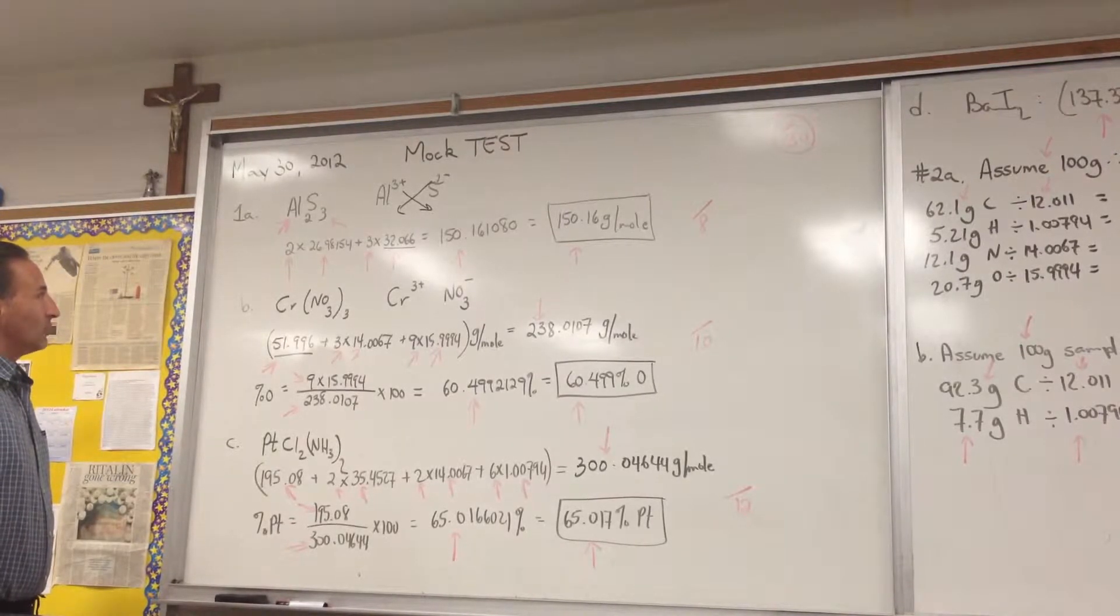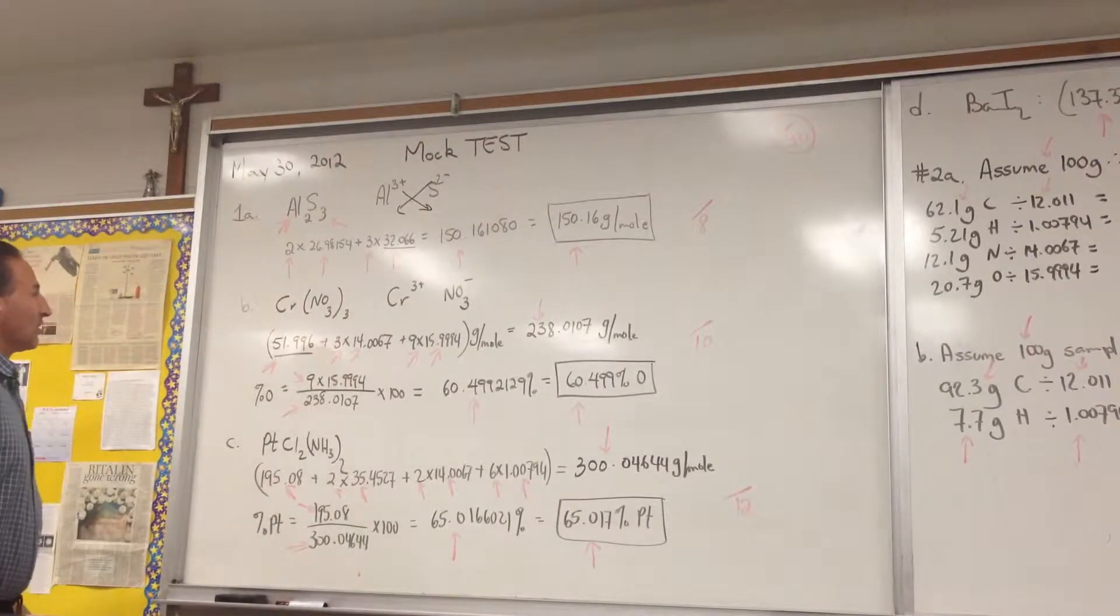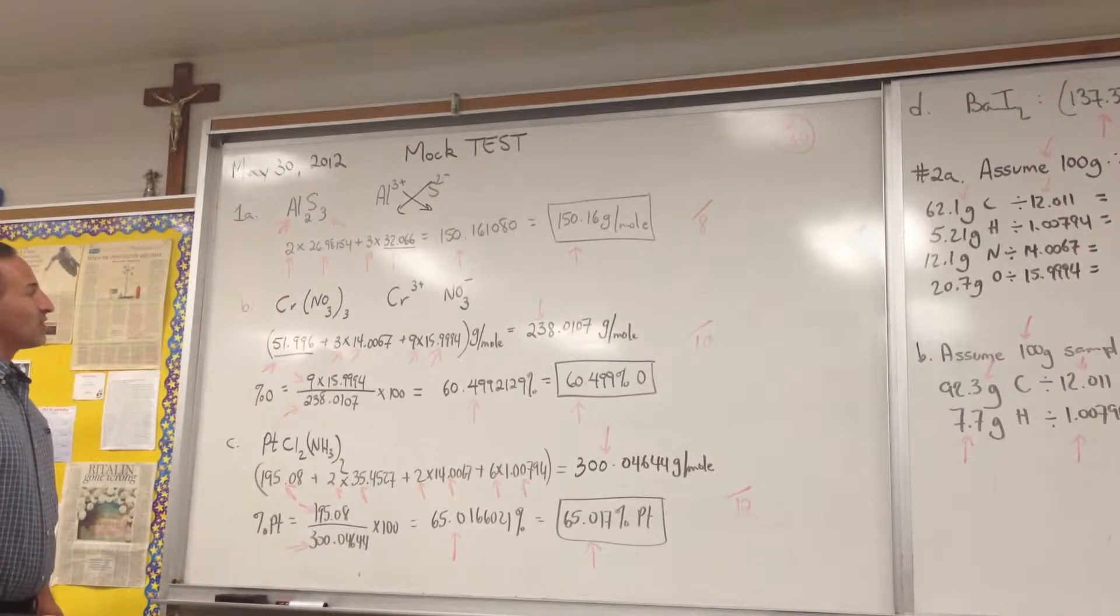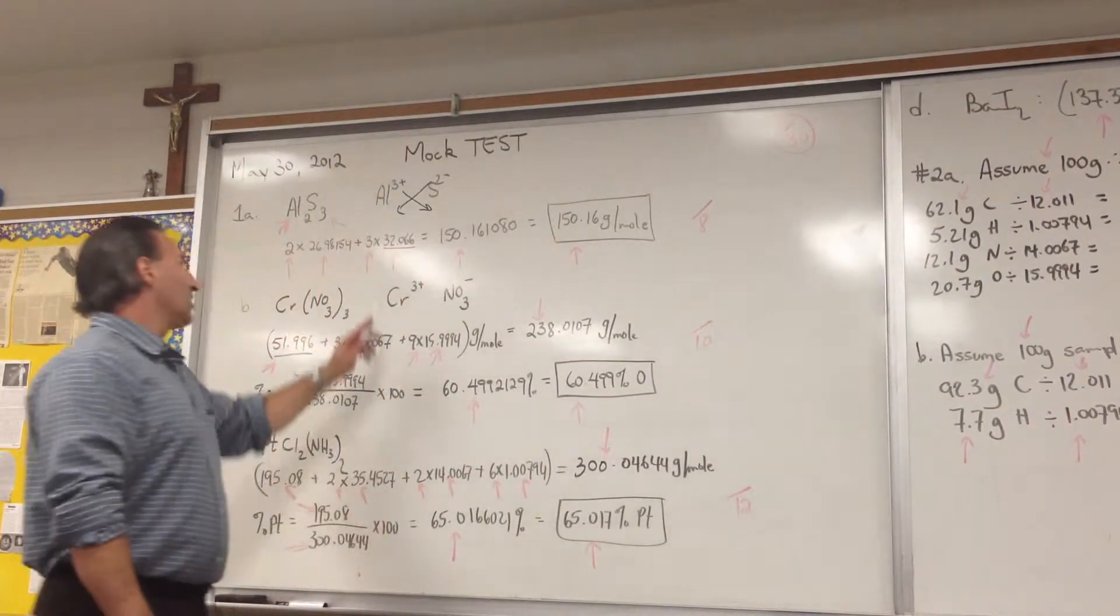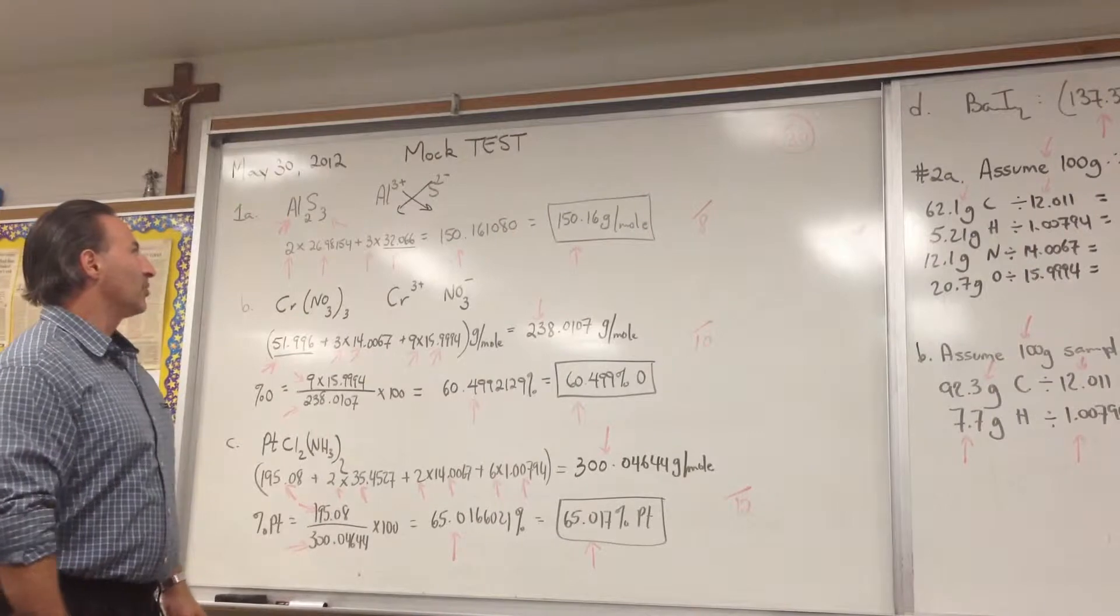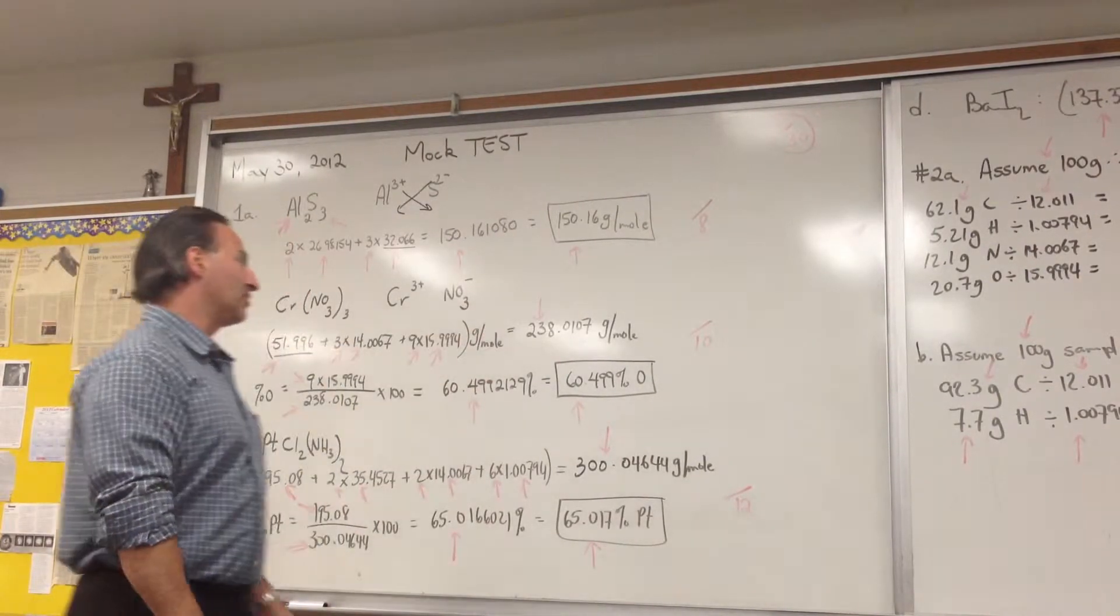So two aluminums and three sulfur atoms will create an ionic substance that has no charges. So aluminum sulfide is Al2S3. To find its molar mass, two times the molar mass of aluminum, three times the mass of sulfur gives you a total of 150.1608. You're only allowed five significant figures because sulfur is reported to only five significant figures of accuracy, so the final answer has to be 150.16.